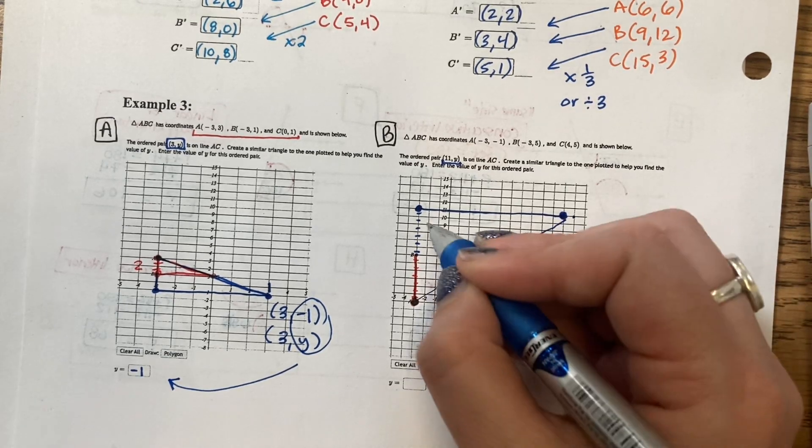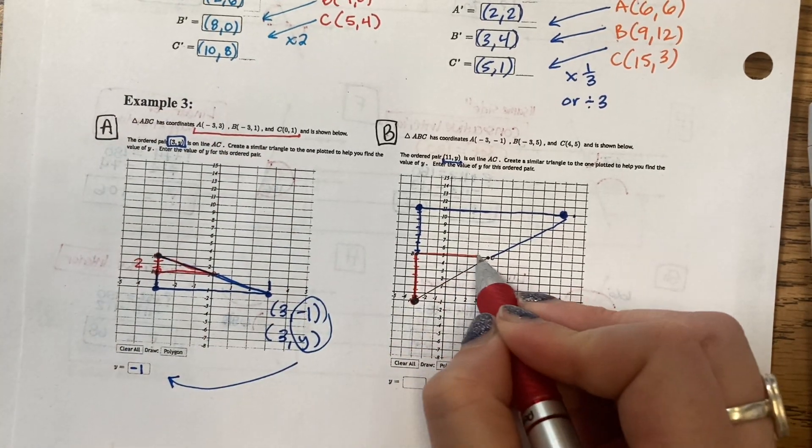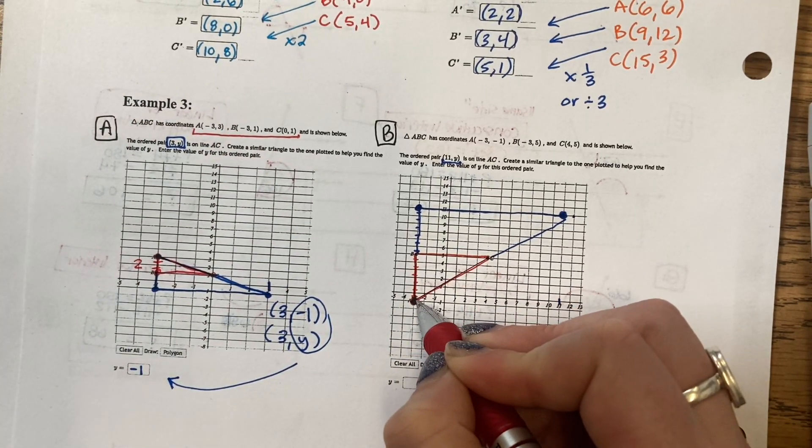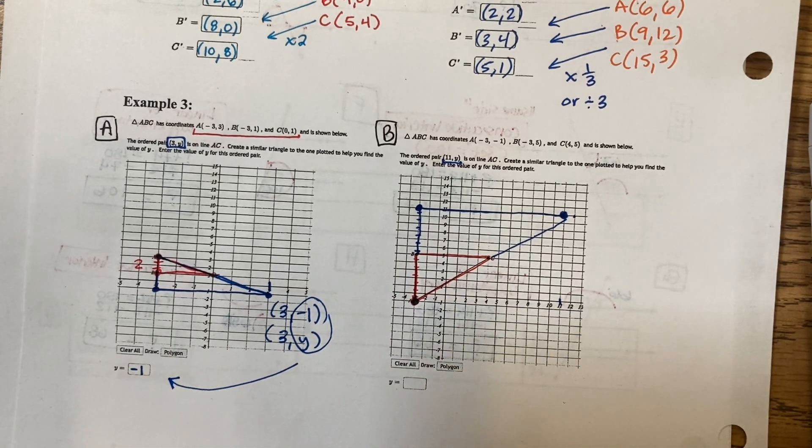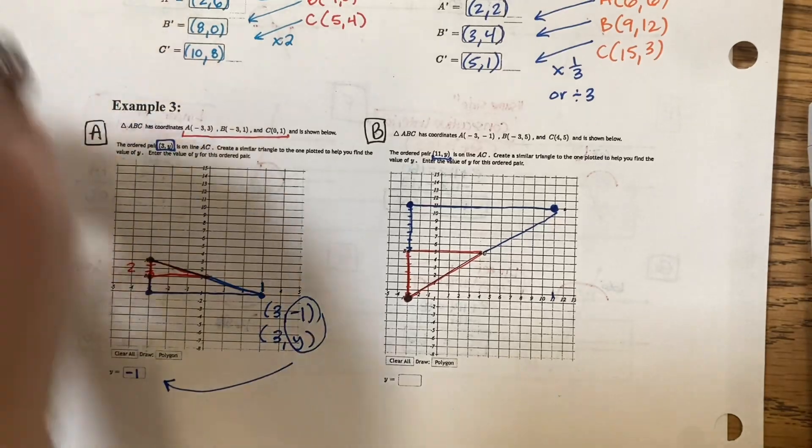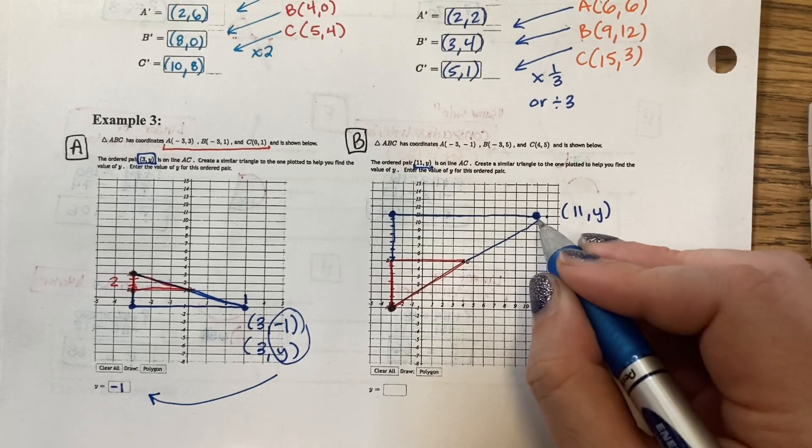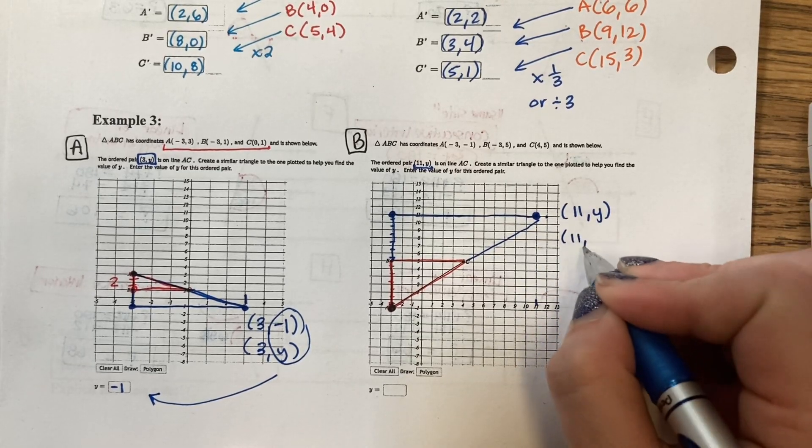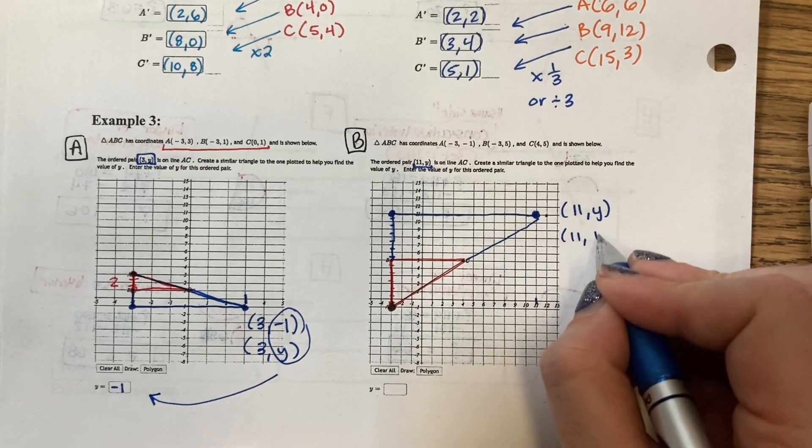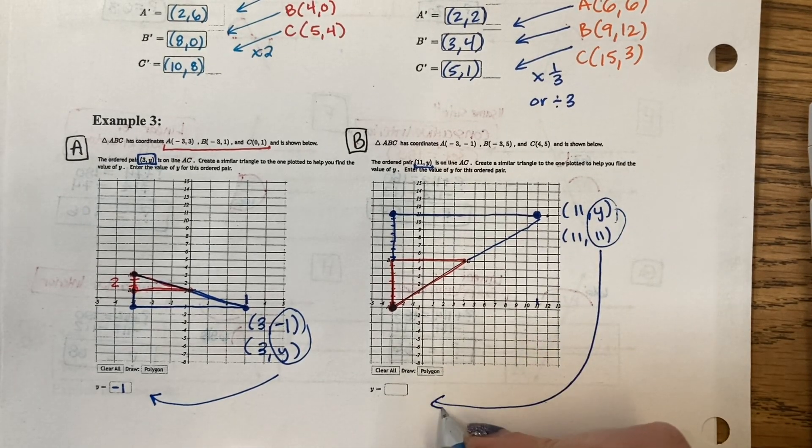That will generate a similar triangle to the given triangle. The point that they gave us was 11 comma Y right here. This point is at 11 comma height of 11. So I'm going to use this to fill in what Y equals. Y equals 11.